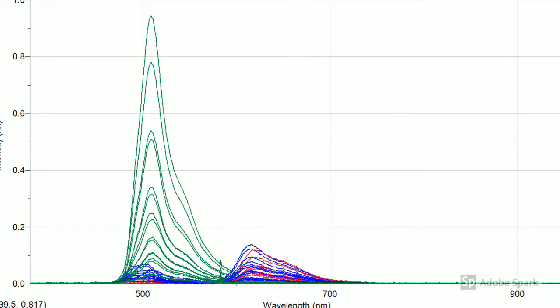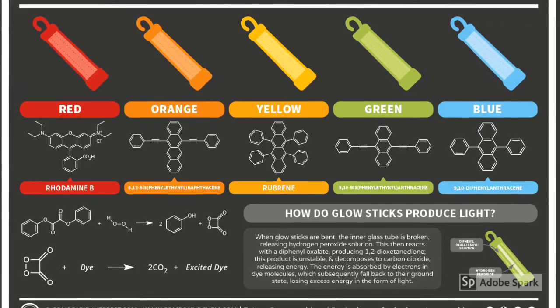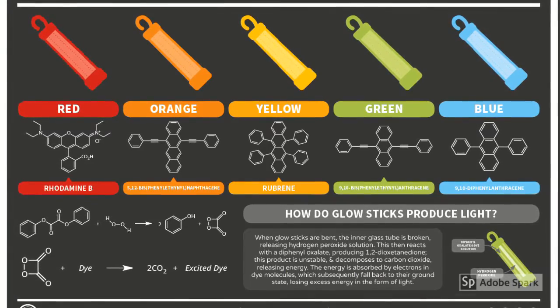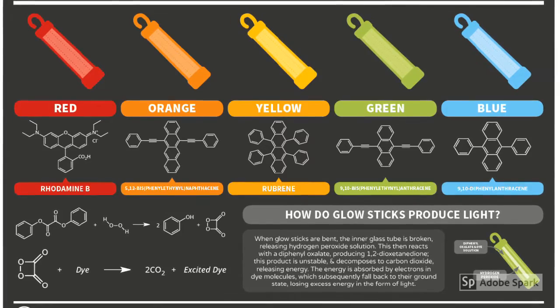These two substances, the activator and glow stick dye, are combined, and the result is the color chemiluminescent glow the glow stick gives off. Reactions with the activator are what causes the molecules to emit photons. Once all of the activator has been used up through reacting with the dye molecules, the substance will stop emitting light.